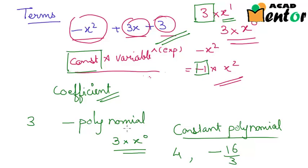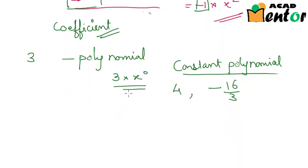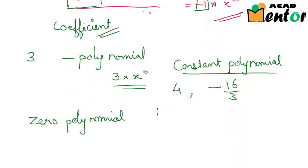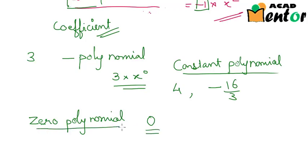Let me tell you what we mean by a zero polynomial. A zero polynomial is a special case of a constant polynomial where the number is 0. So 0 represents a zero polynomial.